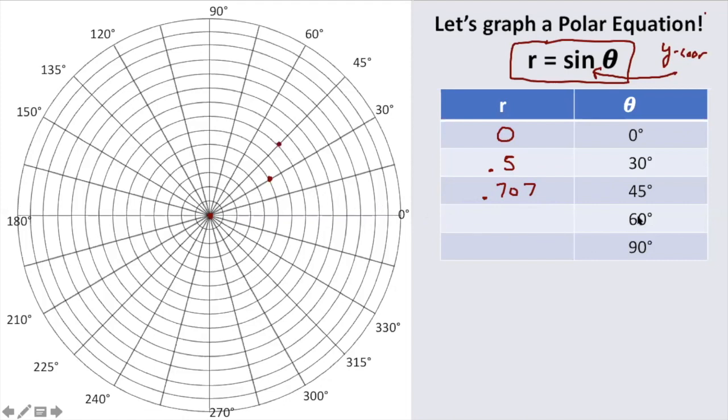Next, 60 degrees. The y-coordinate on the unit circle is root 3 over 2, which is 0.866 approximately.